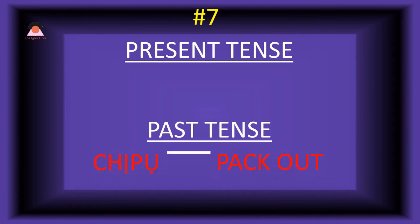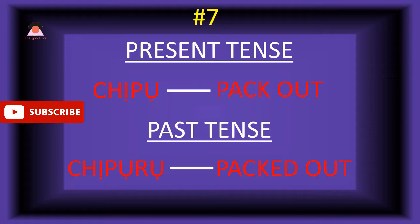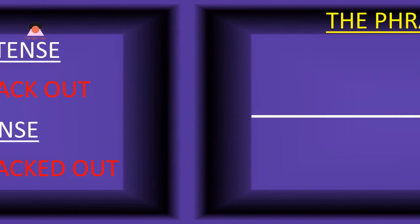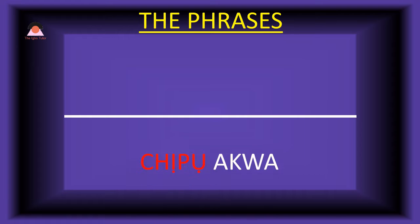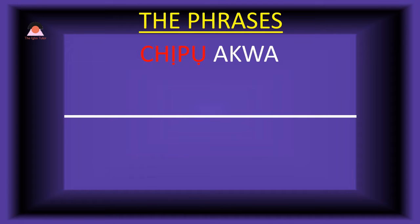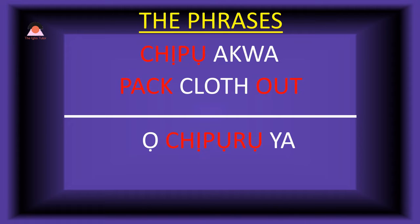Word number seven. Present tense: 'chepu,' which means 'pack out.' The past tense of chepu is 'cheporo,' meaning 'packed out.' Present tense phrase: 'chepu akwa' — pack clothes out. Past tense: 'o-che furu mia' — he packed it out.